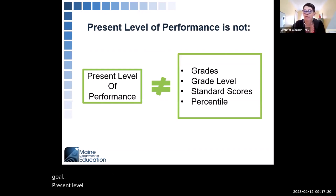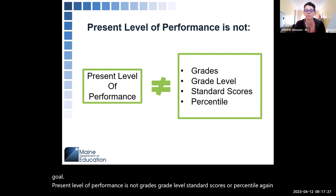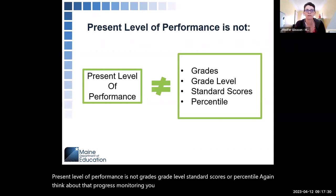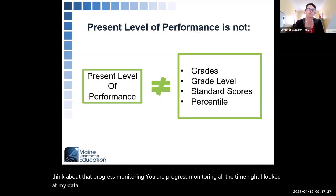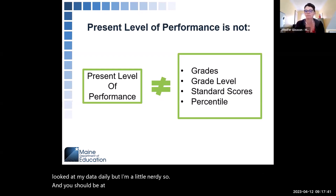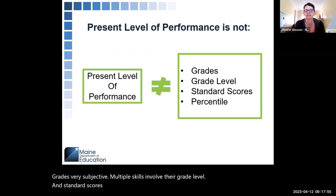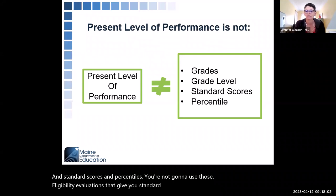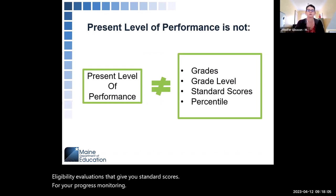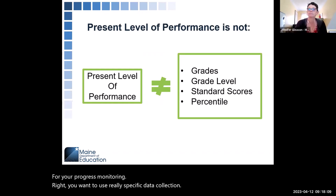Present level of performance is not grades, grade level, standard scores, or percentile. Think about that progress monitoring — you are progress monitoring all the time. You should be at least looking at your data weekly. Grades are very subjective and involve multiple skills. Standard scores and percentiles from eligibility evaluations are not what you use for progress monitoring; you want really specific data collection.